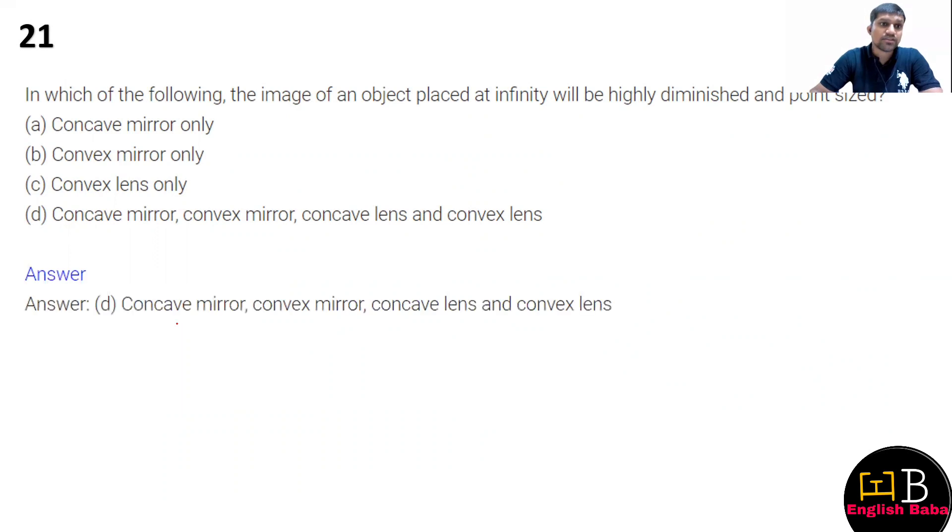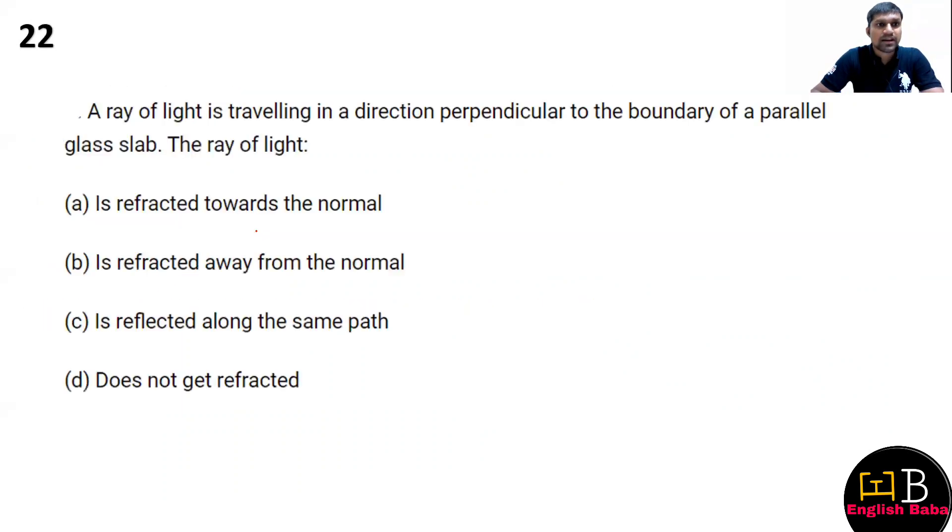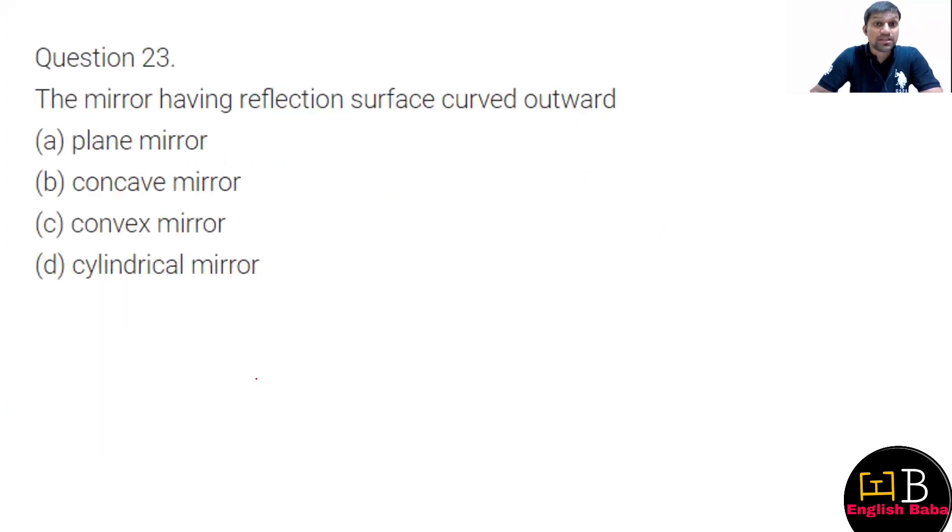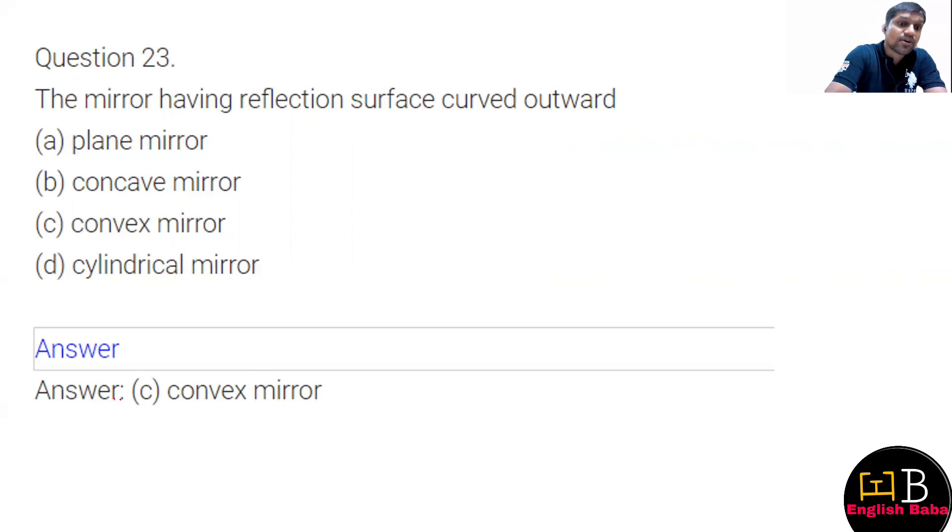Next question: in which of the following will the object at infinity be highly diminished and point size? That's possible in all, so option D is correct. Next, a ray of light is traveling in direction perpendicular - that means at 90 degrees - to the glass slab. So how much reflection will the ray of light have? The correct answer is the ray of light will not reflect, because perpendicular reflection does not happen. Next question twenty-three: the mirror having reflecting surface curved outward - outward curve is convex mirror.